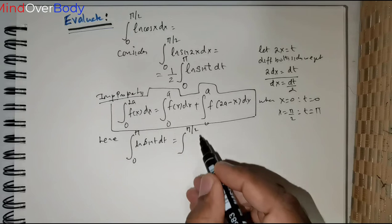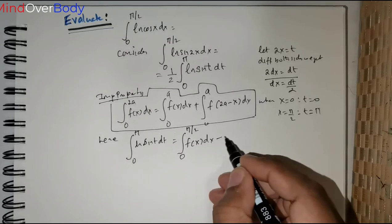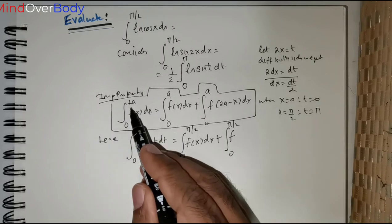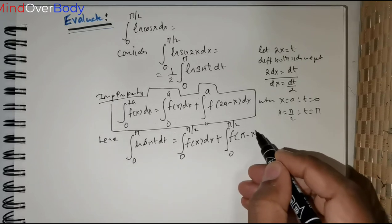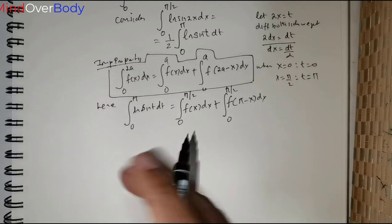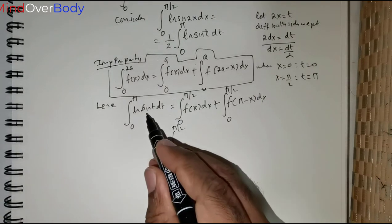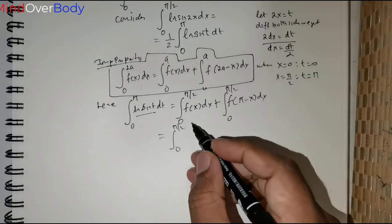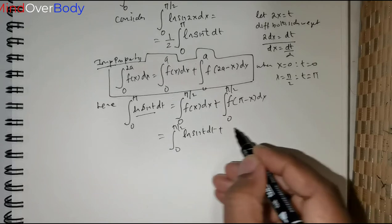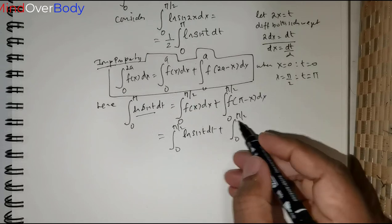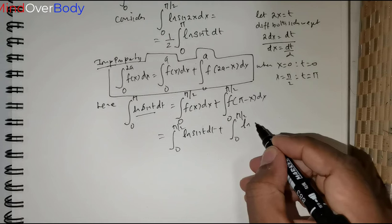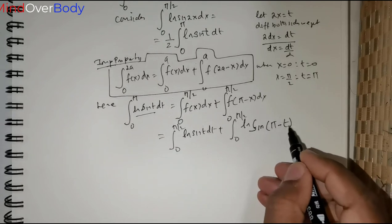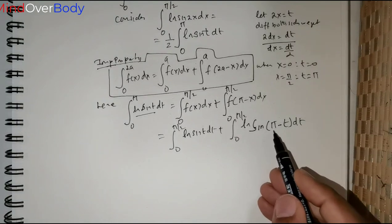Applying the property, ∫₀^π ln(sin t) dt equals ∫₀^(π/2) ln(sin t) dt + ∫₀^(π/2) ln(sin(π − t)) dt. Now, what is sin(π − t)? We know that sin(π − t) = sin t.